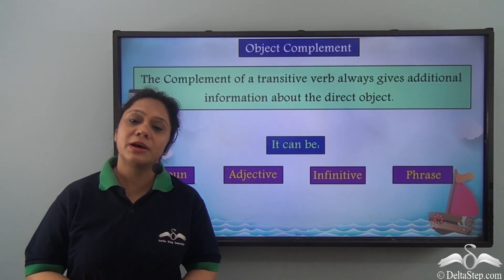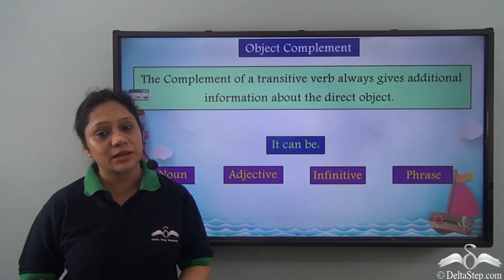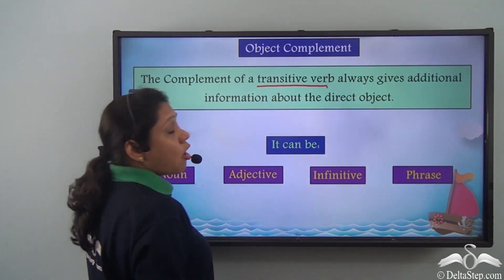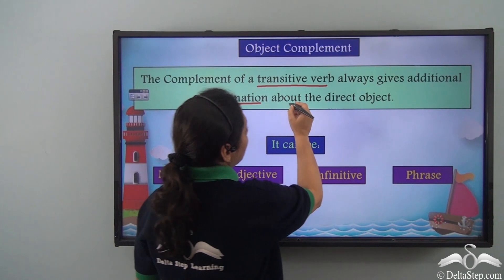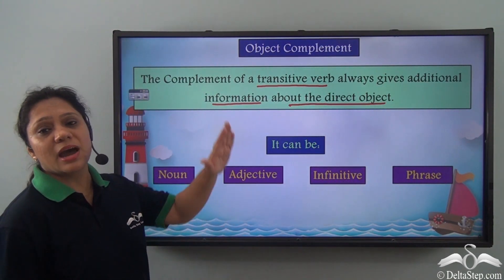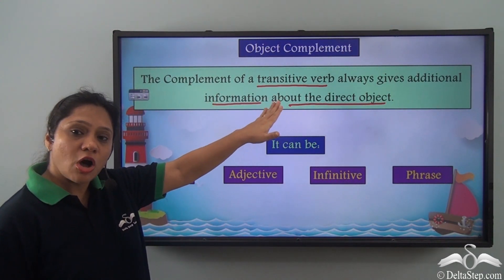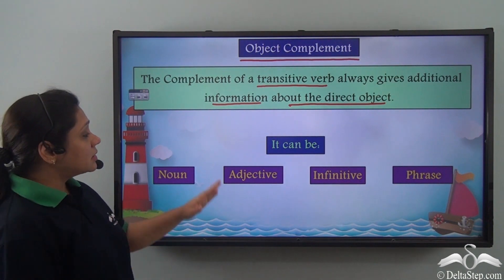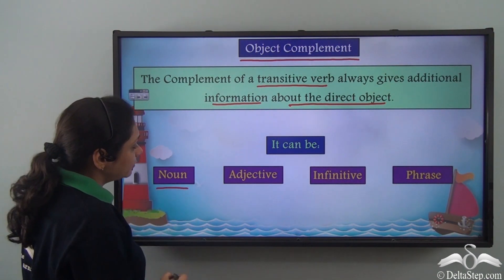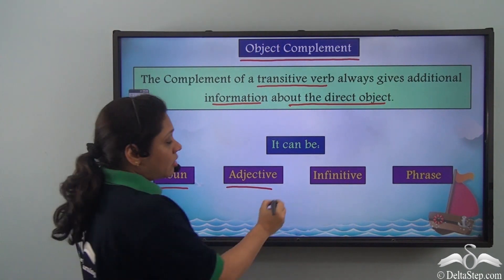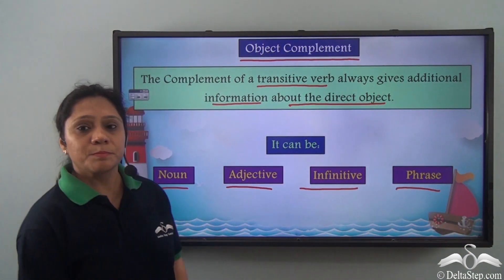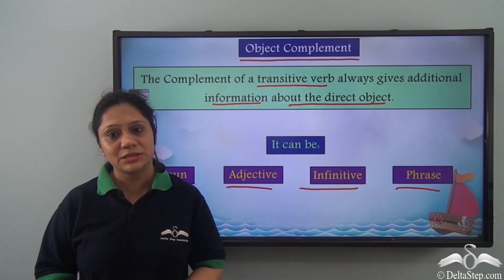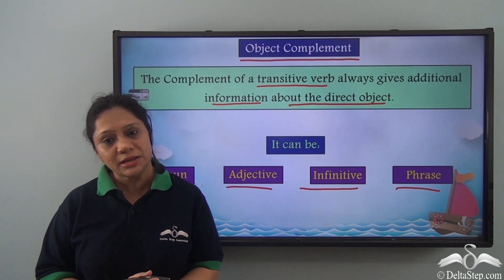Today we have learnt about the object complement in great detail. The complement of a transitive verb always gives additional information about the direct object. Remember, they are never used with indirect objects — and so these complements are known as object complements. An object complement can be a noun, an adjective, an infinitive, or a phrase. We have also learnt about the subject complement and the object complement, and I hope you can now easily distinguish between them.